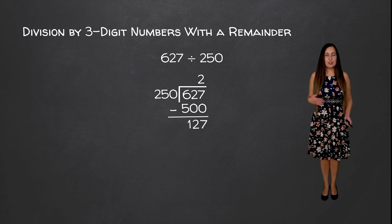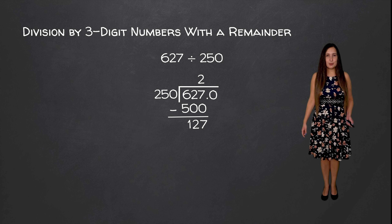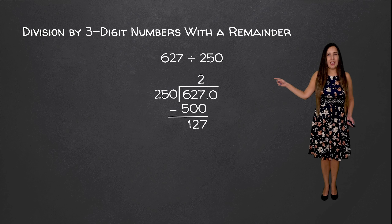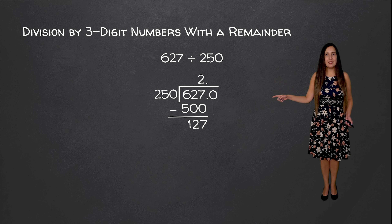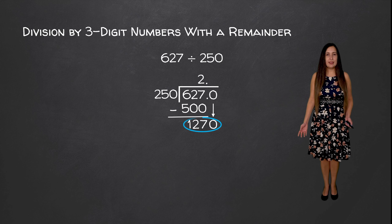Now in order to keep going to get our decimal answer, we have to add a decimal after the 7 in 627 and then a zero as well. Then we're going to look at our quotient and add a decimal place after the 2 as well. We're going to bring down the zero, and now we want to see how many times 250 goes into 1270.